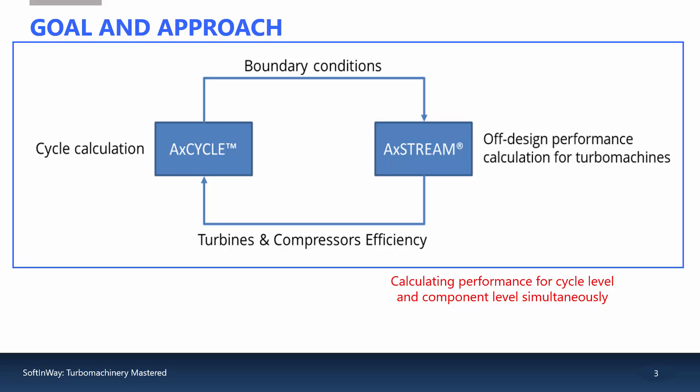For each part load point, we create a loop to find the efficiency match. In this loop, data from AxeCycle is transferred to AxeStream and back. AxeCycle runs the calculation for the whole cycle, first by using an estimated efficiency for each turbo machine, which then provides the boundary conditions of the components in AxeStream.